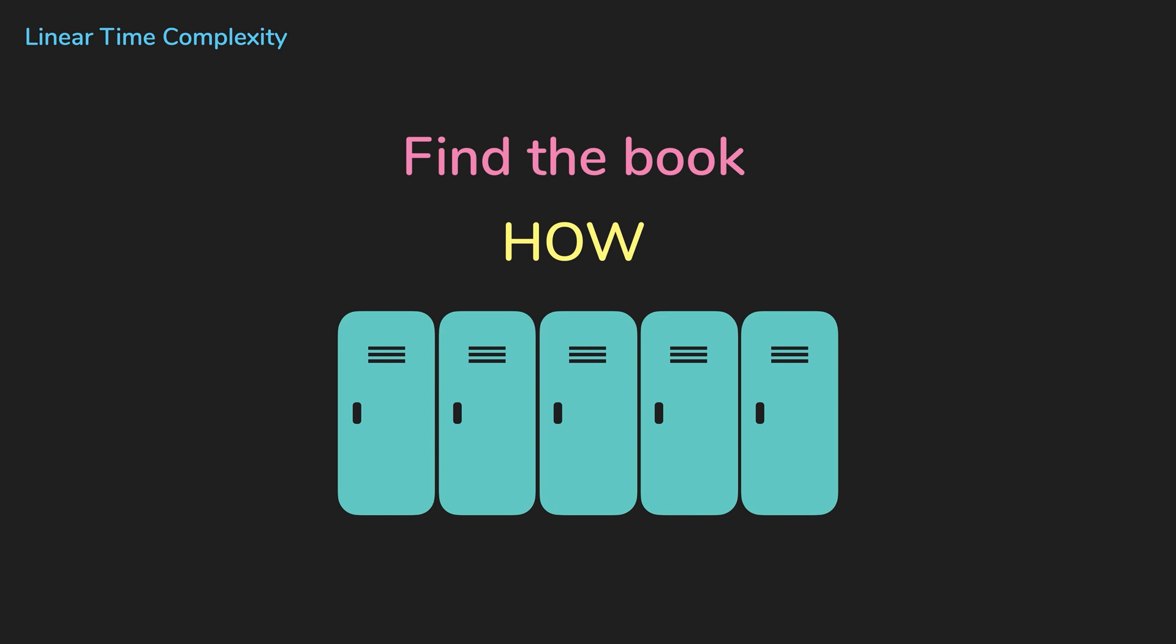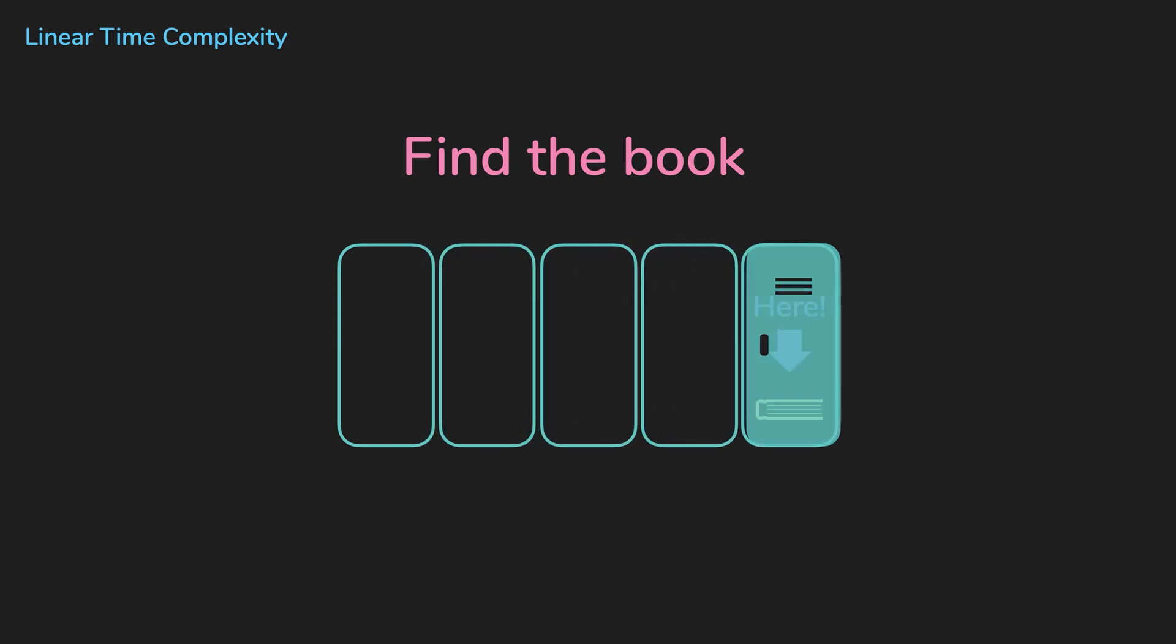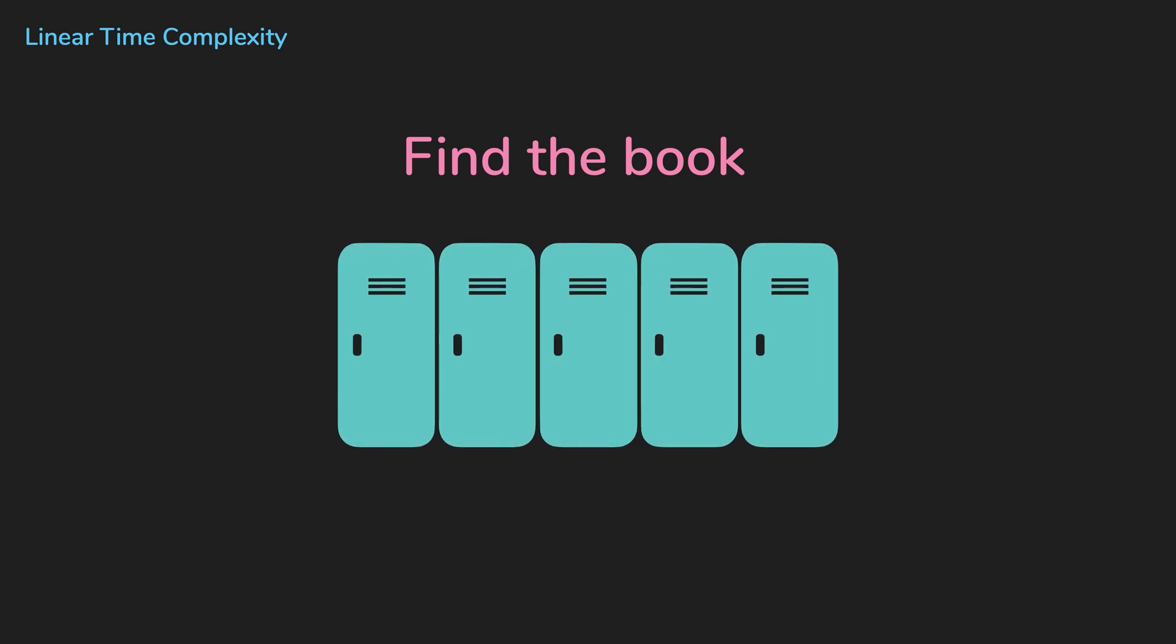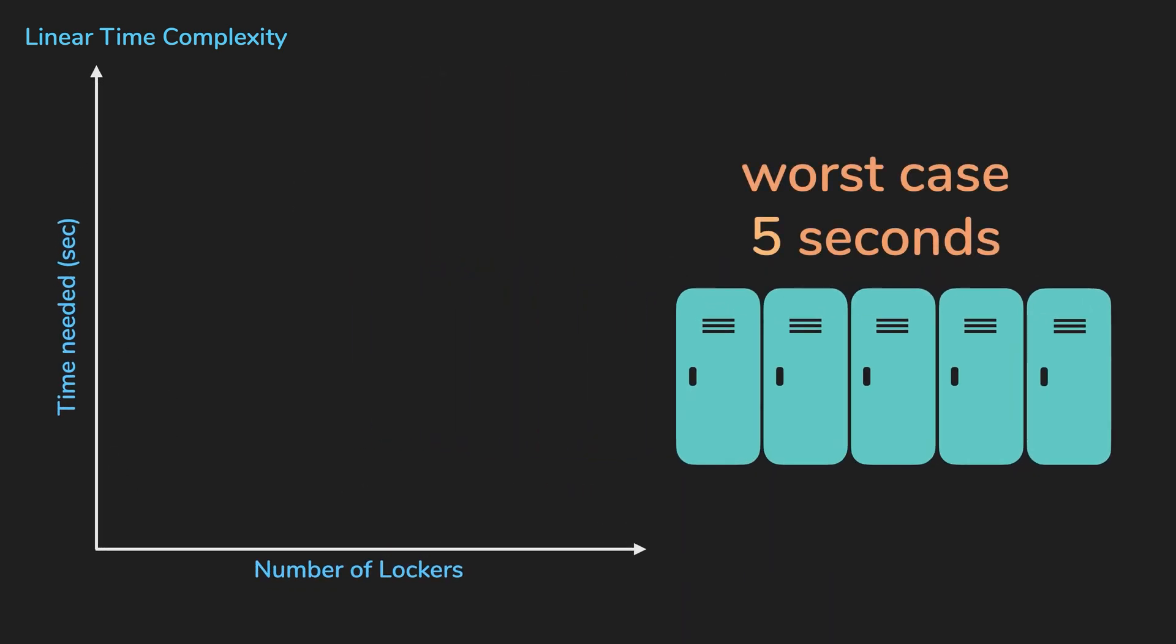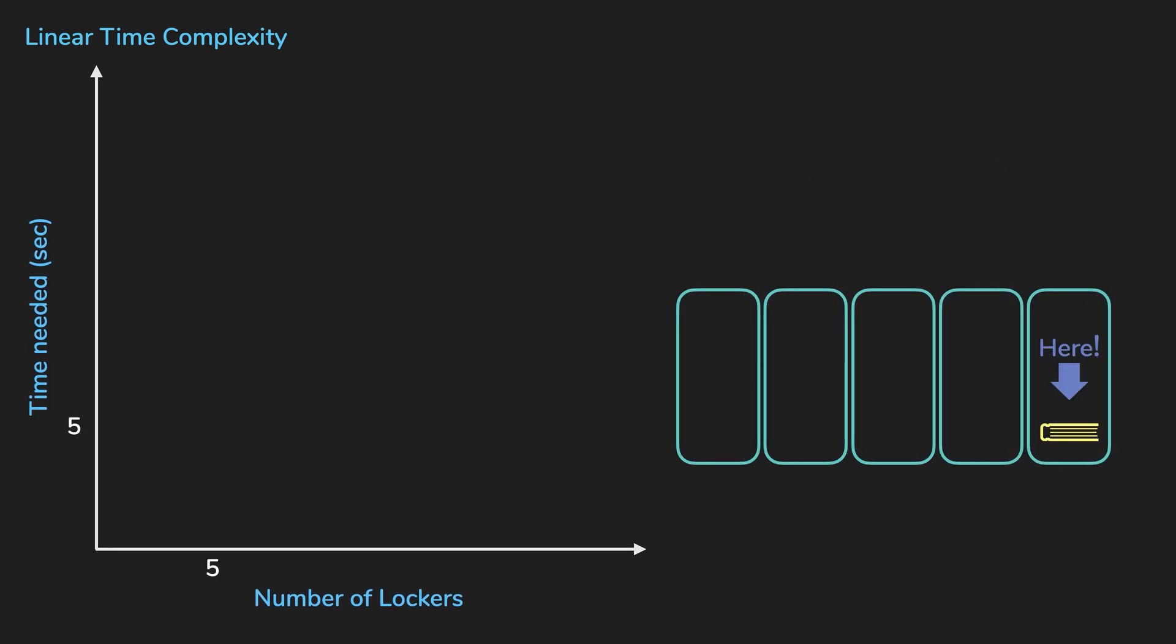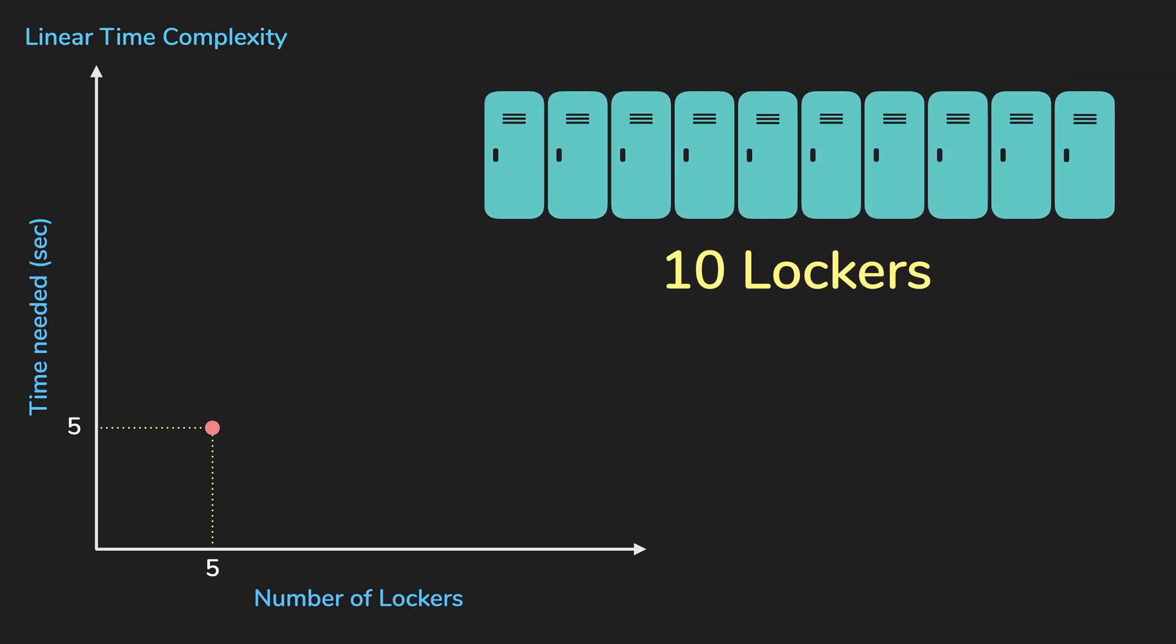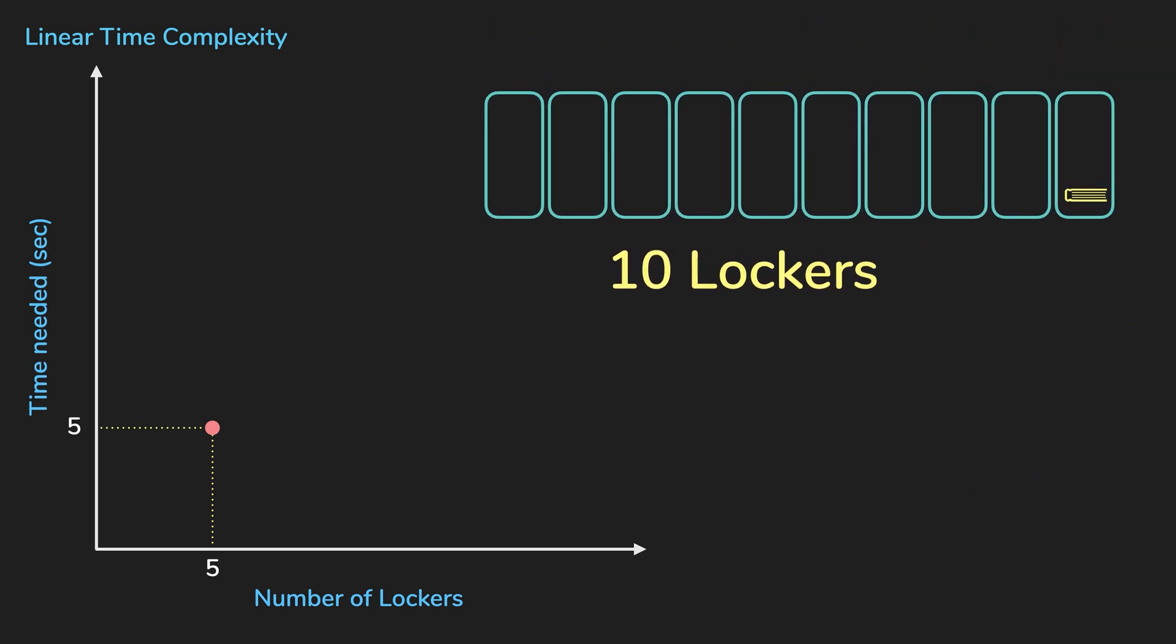Linear. First, let's say you have no information about where the book is and you need to look into each locker one by one until you find the book. If it takes one second to open a locker and there are five lockers, in the worst case, it's going to take you five seconds where the worst case would be when the book is in the last locker. If there are 10 lockers, it'll take 10 seconds, 100 lockers, 100 seconds, and so on.